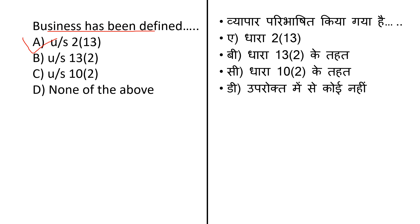Section 2 clause 13 of the Income Tax Act 1961 states that unless the context otherwise requires, the term 'business' includes any trade, commerce or manufacture, or any adventure or concern in the nature of trade, commerce or manufacture. It may be noted that income from the business is chargeable to income tax. Second option is Section 13 clause 2.